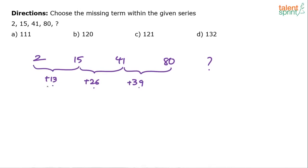All these are multiples of 13, right? 13 into 1, 13 into 2, 13 into 3. So obviously the next one has to be 13 into 4 which is 52.